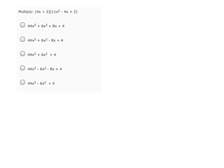Multiplying these two terms, we need to distribute the binomial into the second polynomial. So we have 4x plus 2, all times the quantity 11x squared minus 4x plus 2. So first, let's distribute this 4x into each term.